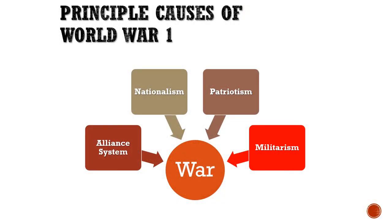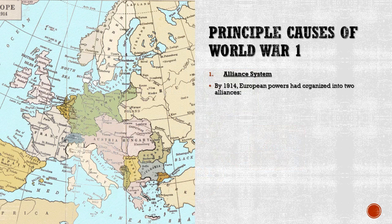To understand how Gavrilo Princip's assassination could set off a chain reaction leading to World War One, we need to look at the root causes. There are four main reasons: number one is the alliance system, number two is nationalism, number three is patriotism, and the final factor is militarism.